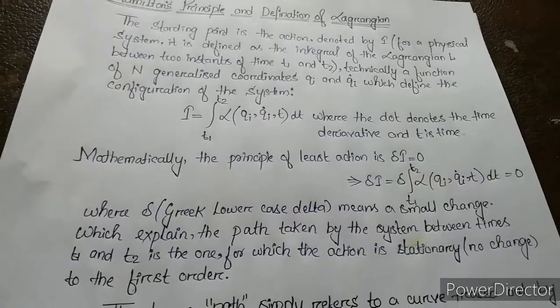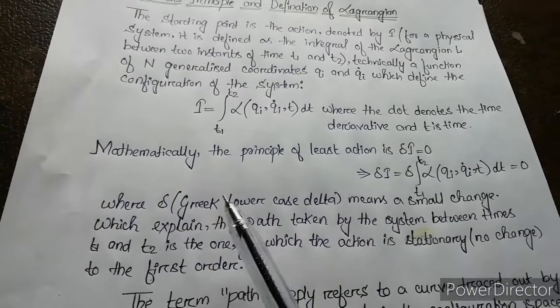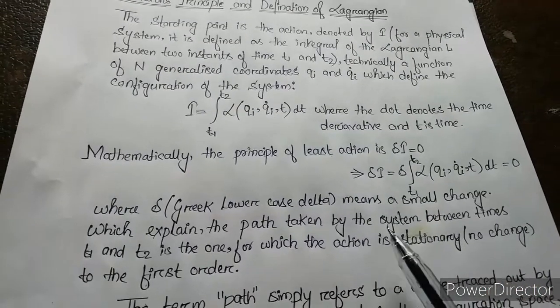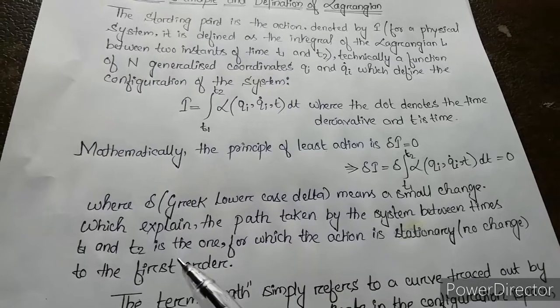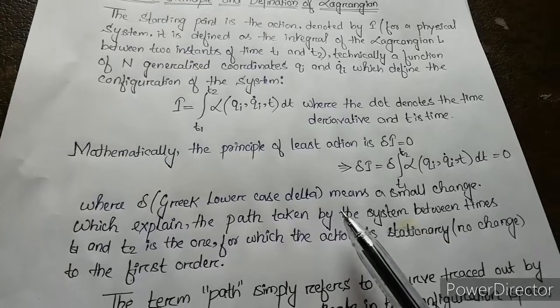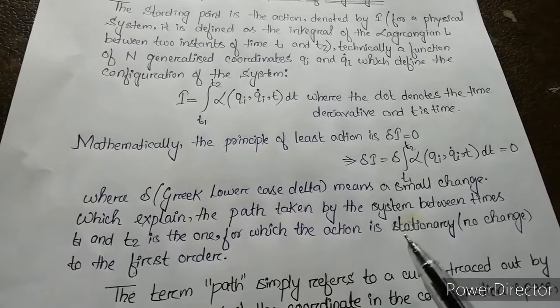Here, delta means a small change. This equation explains that the path taken by the system between times t1 and t2 is that particular path for which the action is stationary, meaning the action is not changing to the first order.